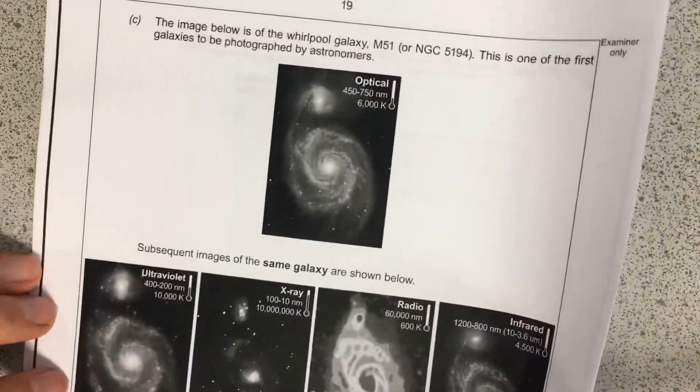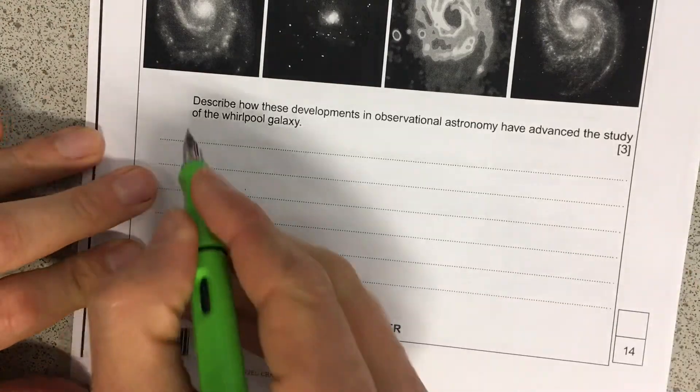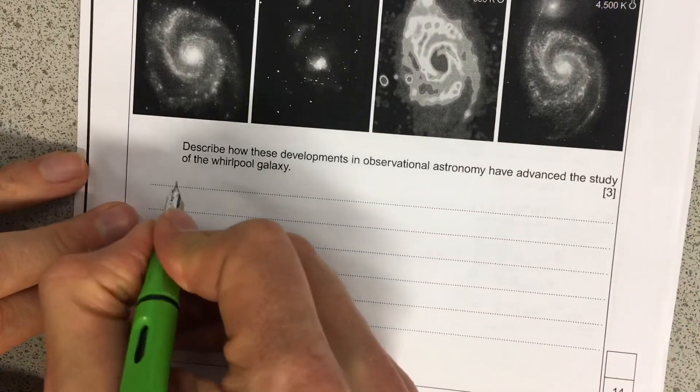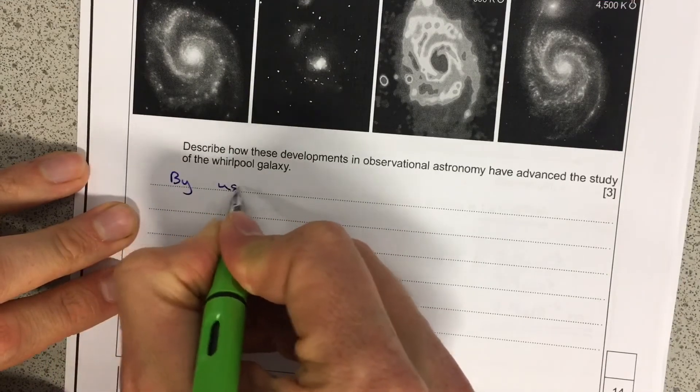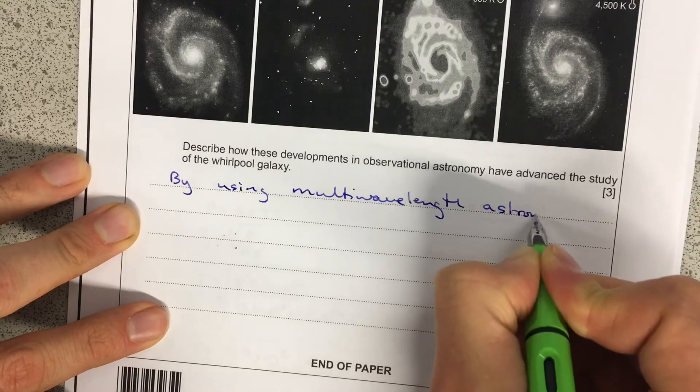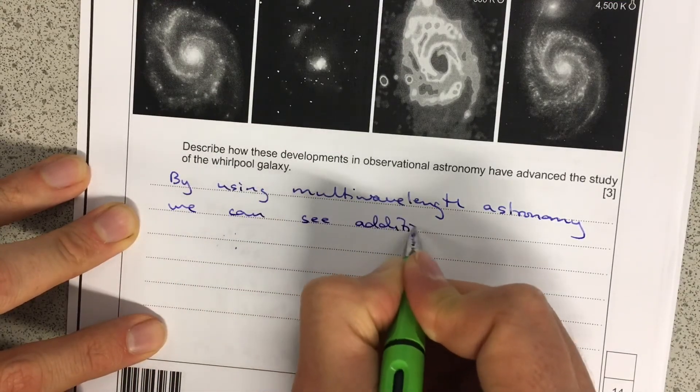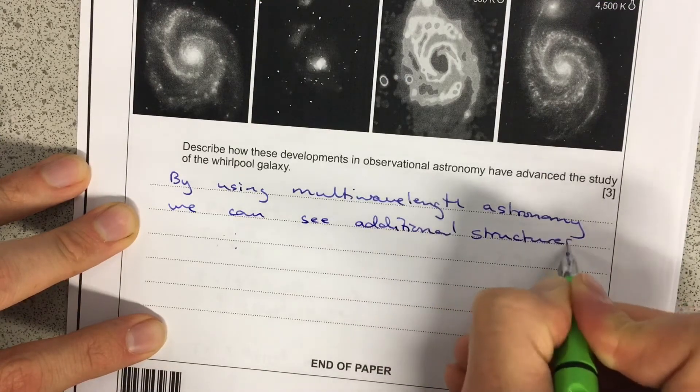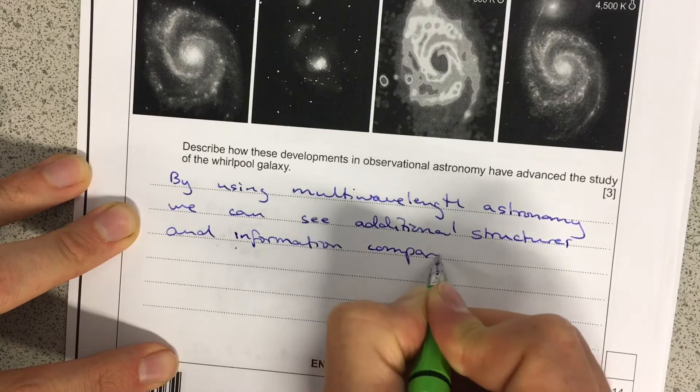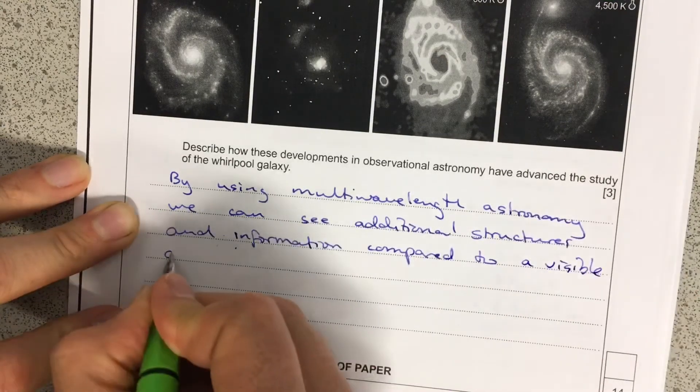OK, and the last part of this question here is all about some multi-wavelength astronomy. So, after we've had a bit of fun looking at the pretty pictures, describe how these developments in observational astronomy advance the study of whirlpool galaxies. So, we need to say something about multi-wavelengths here. So, by using multi-wavelength astronomy, we can see additional structures and information compared to a visible-only image.